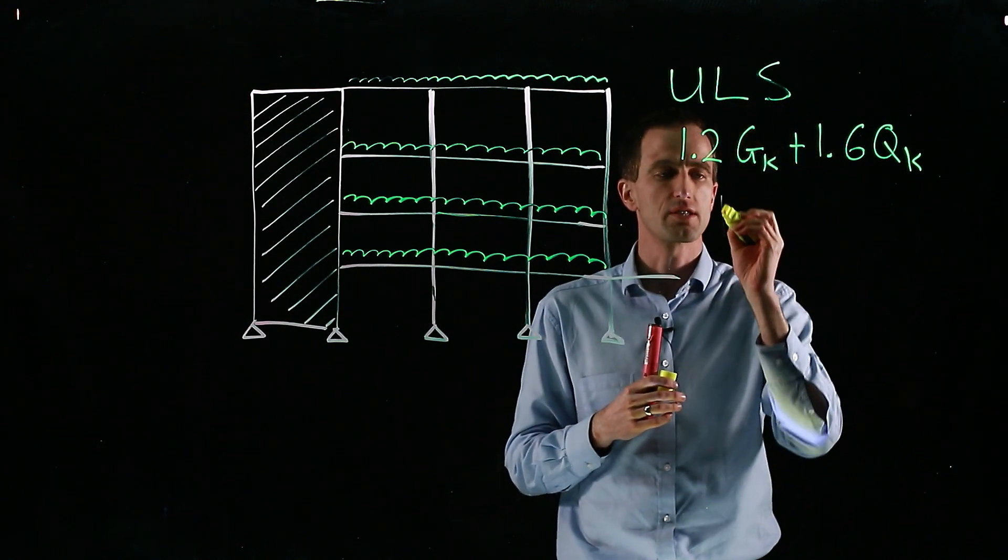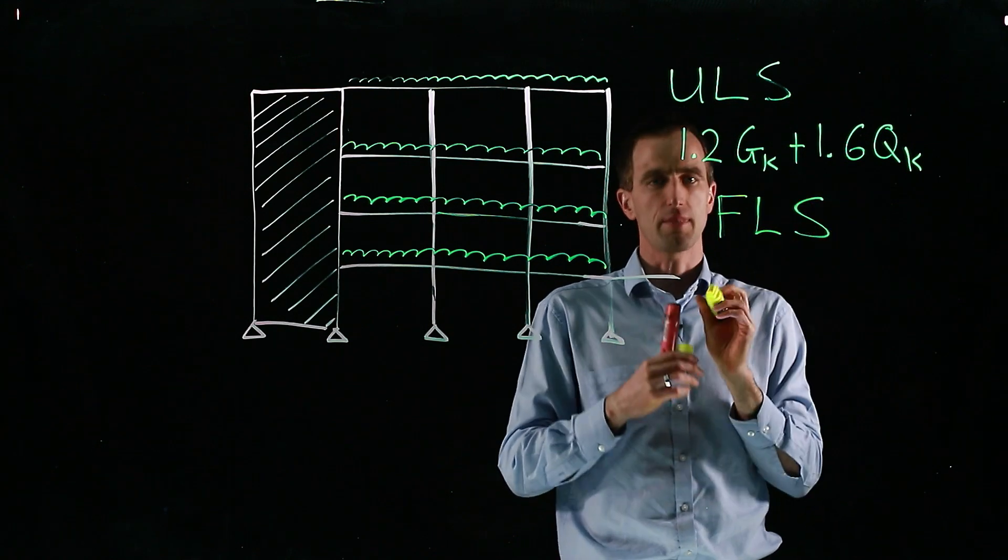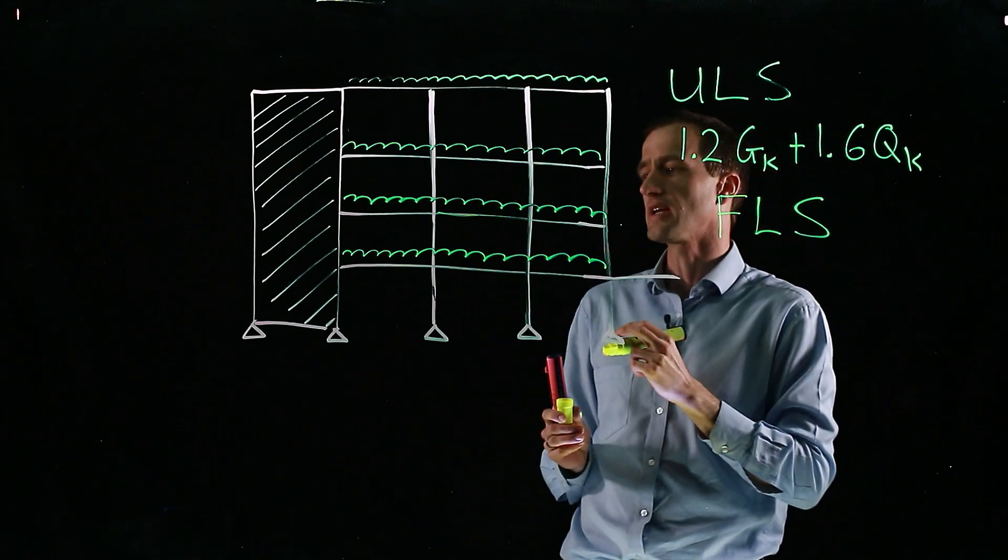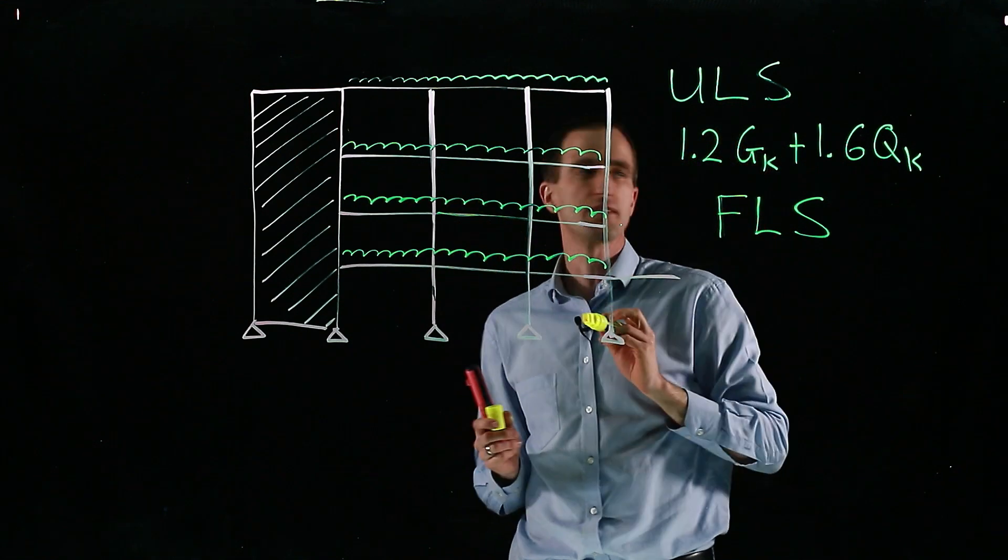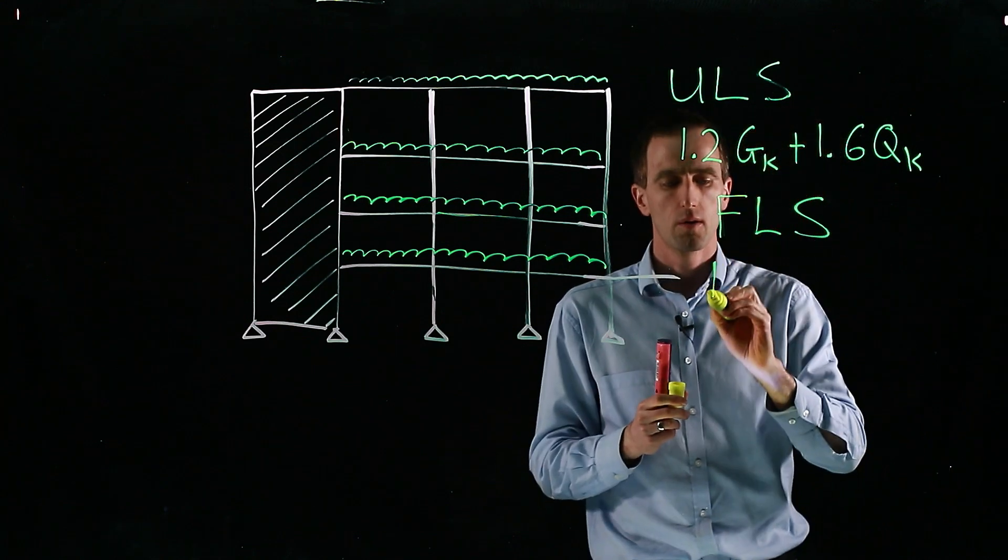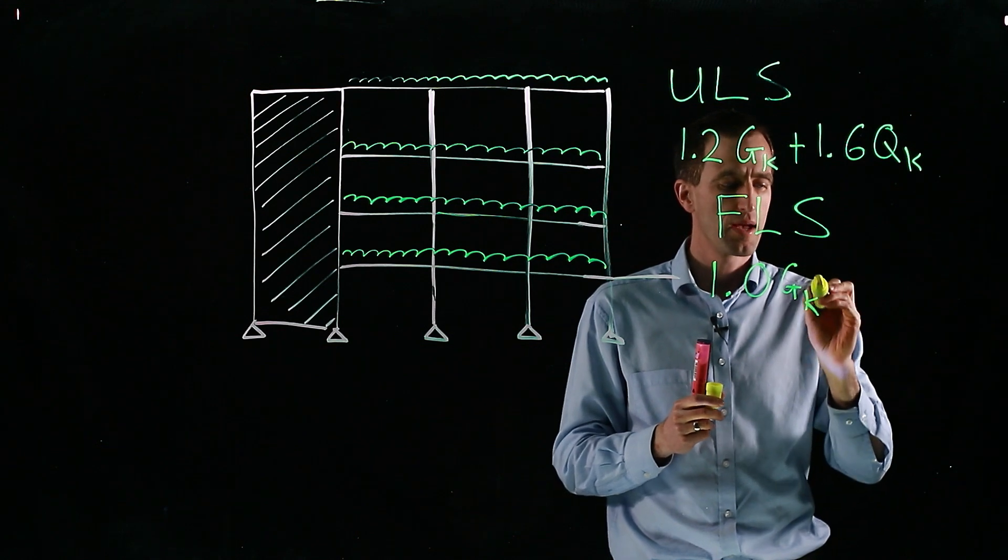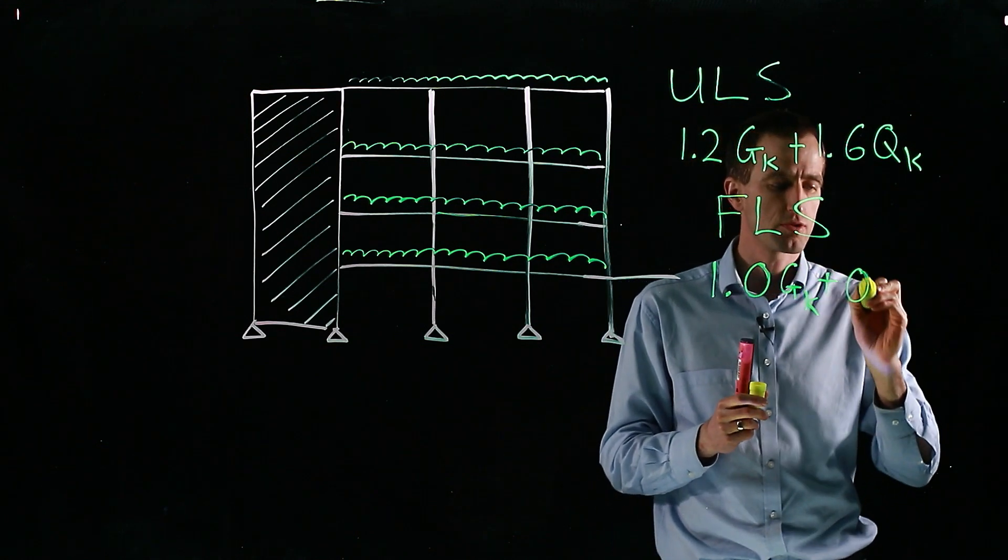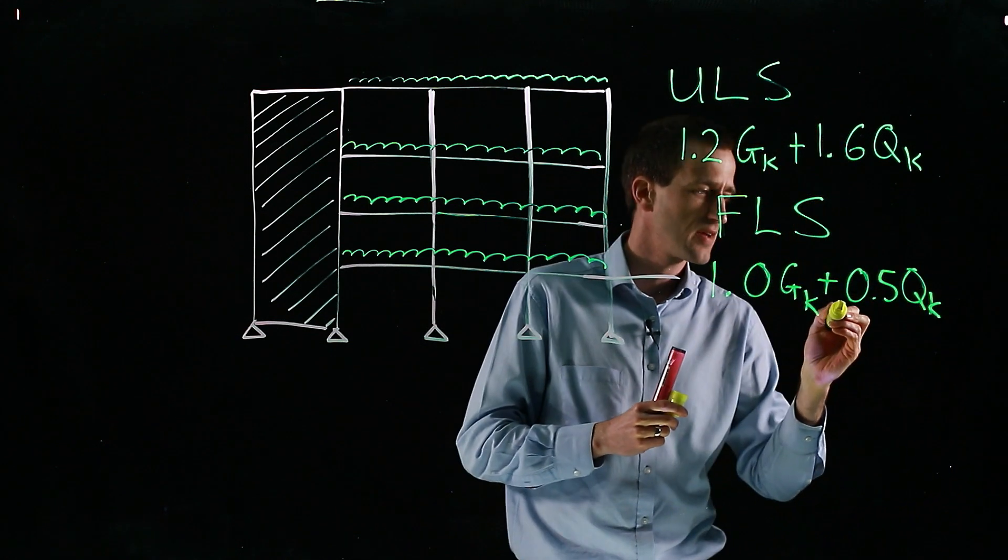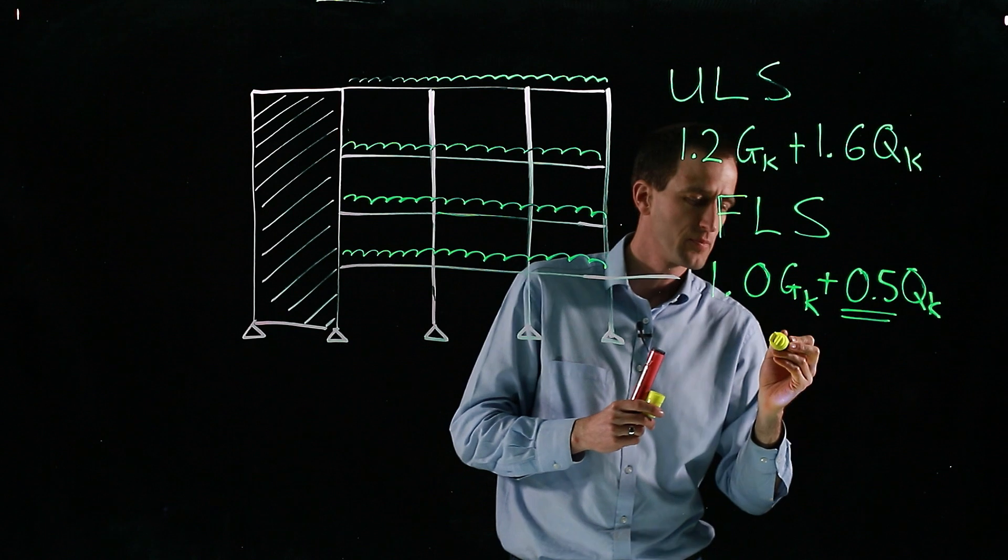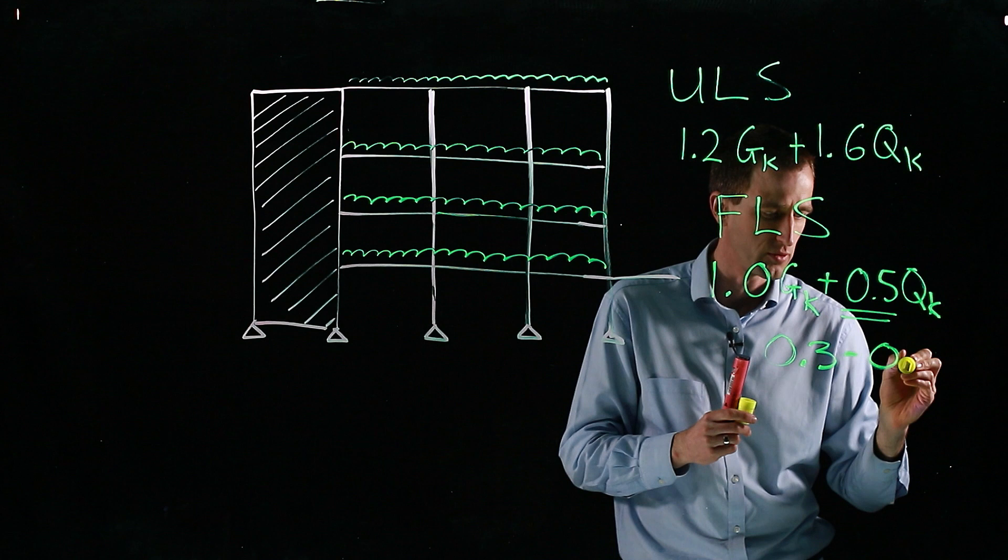But now when the fire breaks out, the chance of the worst fire being at the same time, a very short period of time as the worst loading in 50 years is quite small. So this loading that we apply to the building, we can reduce. And so we generally use around 1 times the dead load, plus a much reduced factor on the imposed load. This value of 0.5, depending on which code you use, can vary between about 0.3 to 0.9.